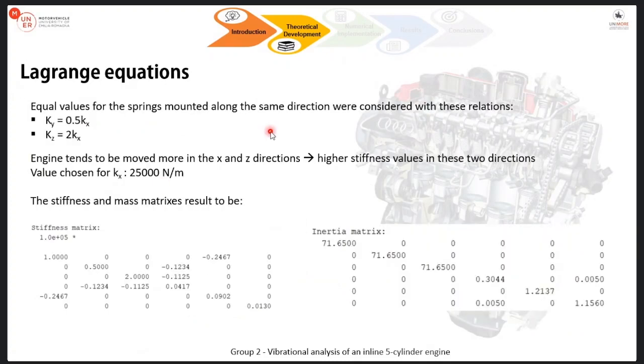We did two fundamental assumptions. The first assumption was to assume that all the springs in one direction had the same values. The four springs in the x direction had the same values, all the springs in the y direction had the same values and the same thing for the z direction. Second thing, we found a precise value in literature that we assumed the stiffness in the x direction had. According to that, since the engine tends to be moved more in the x and z direction, we assumed we estimated two reasonable values for the stiffness values in the y and z direction. Finally, we had our two stiffness and inertia matrix. As it can be seen here, they proved to be reasonable matrices since they had positive diagonal elements and they both are symmetric.